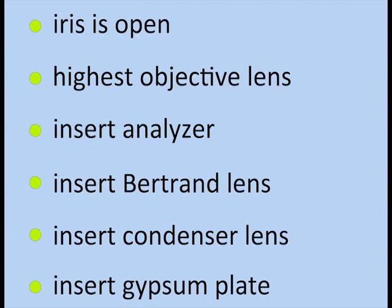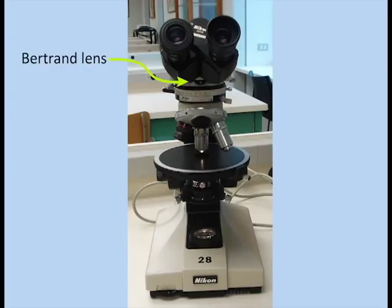To observe the conoscopic figures, you must make sure the substage iris is open, focus on a grain at the highest objective power, insert analyzer, insert the Bertrand lens, and finally insert the condenser lens. If viewing the optic sign, insert the gypsum plate.